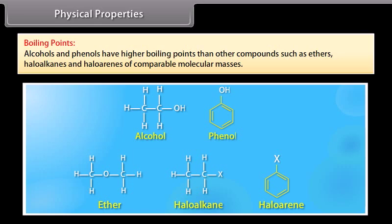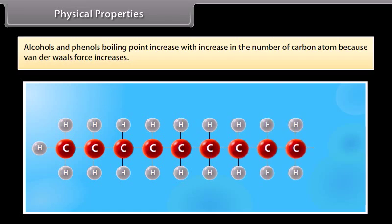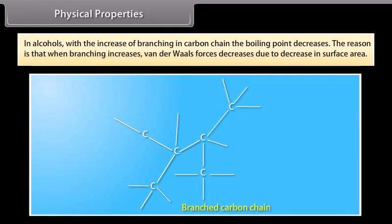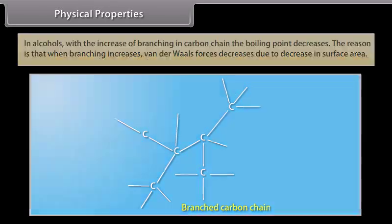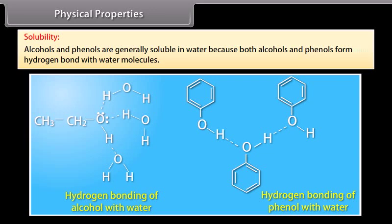Physical properties — boiling points: alcohols and phenols have higher boiling points than other compounds such as ethers, haloalkanes and haloarenes of comparable molecular masses. Boiling point increases with increase in the number of carbon atoms because van der Waals forces increase. In alcohols, with an increase in branching in the carbon chain, the boiling point decreases, because branching decreases van der Waals forces due to a decrease in surface area. The hydrogen atom in the O-H group of alcohols and phenols is bonded to an electronegative oxygen atom, making it capable of forming hydrogen bonds.